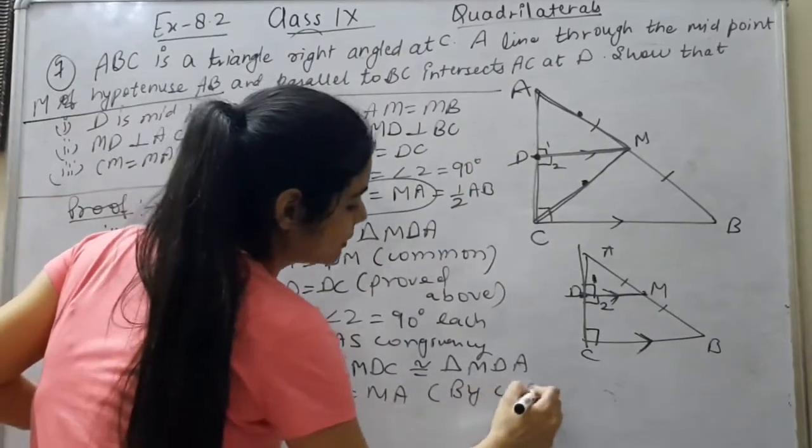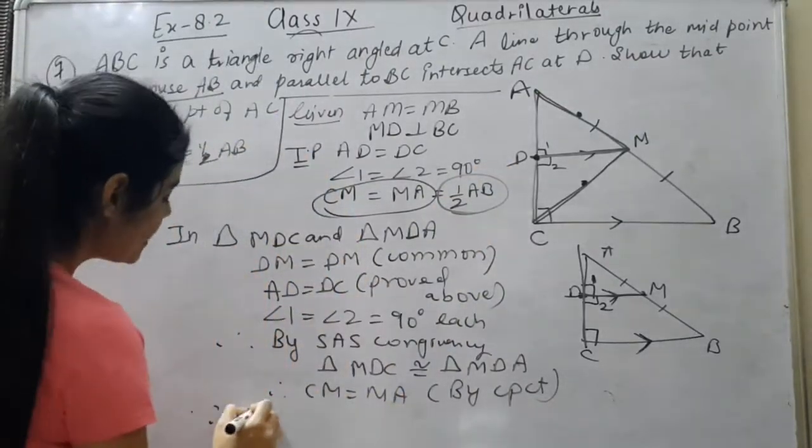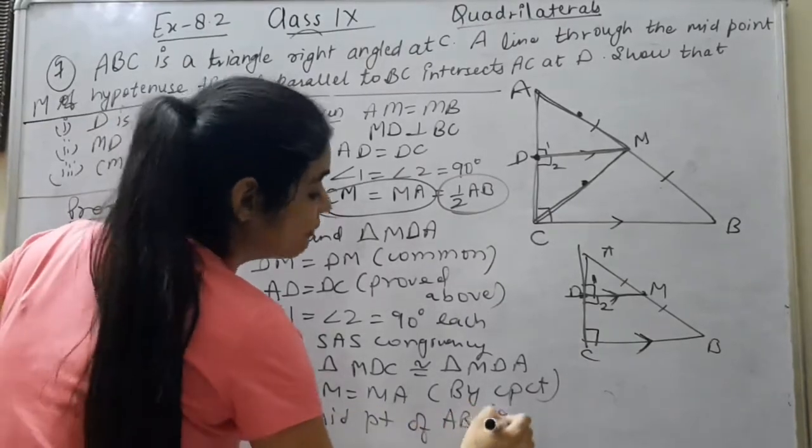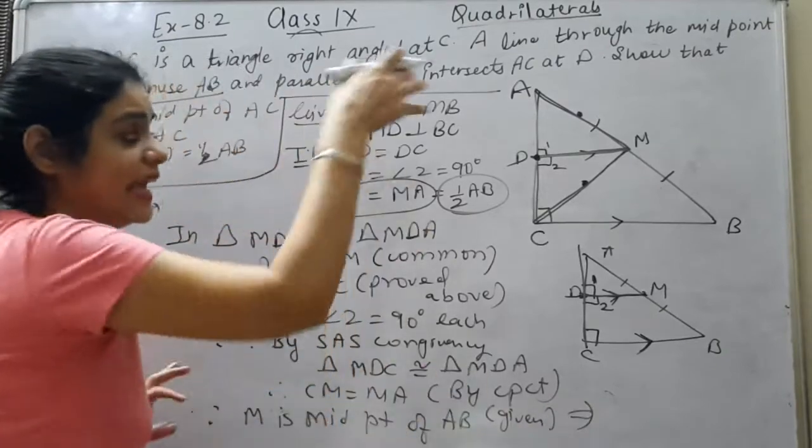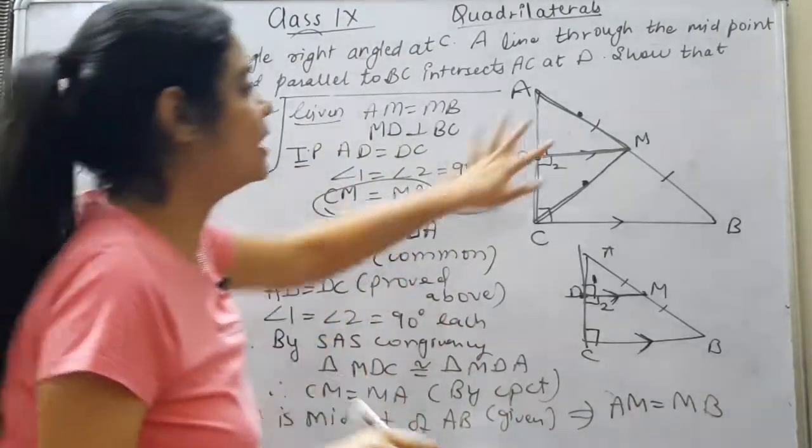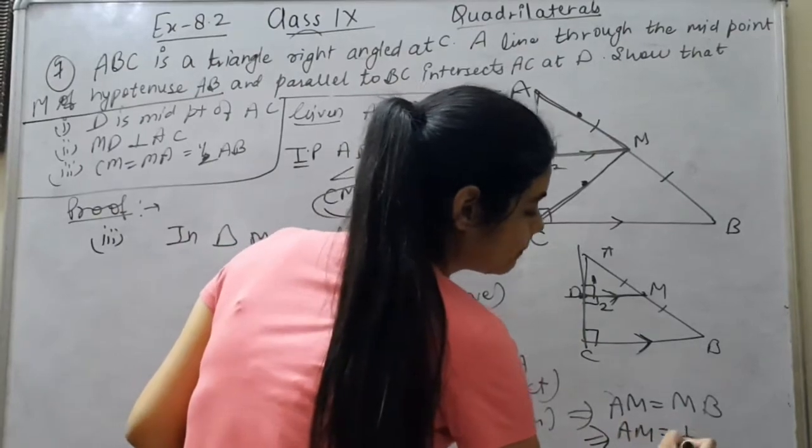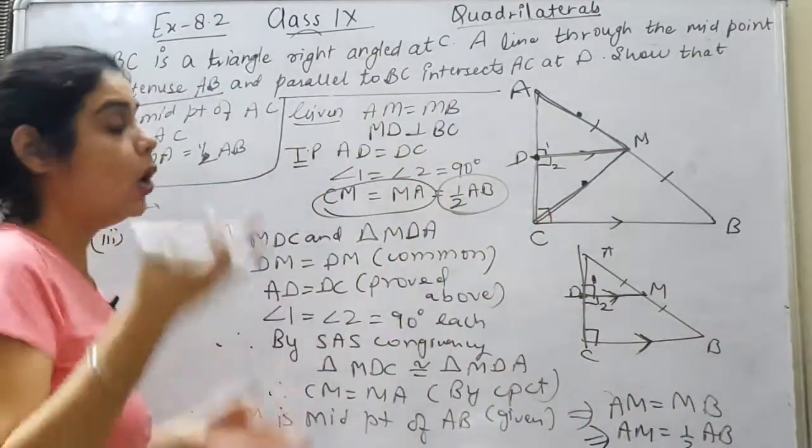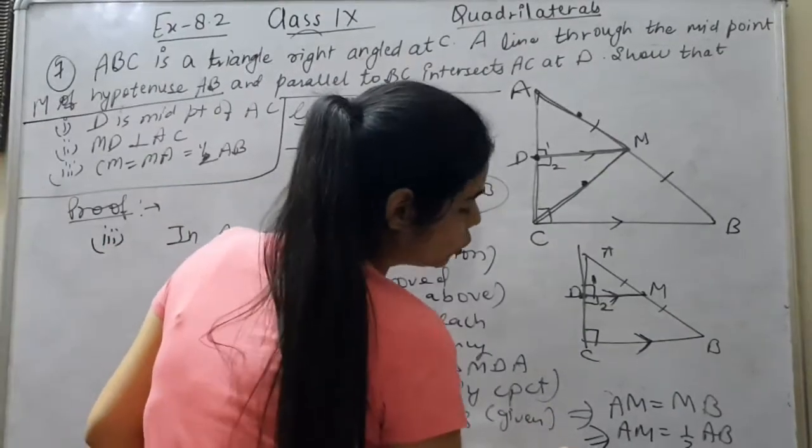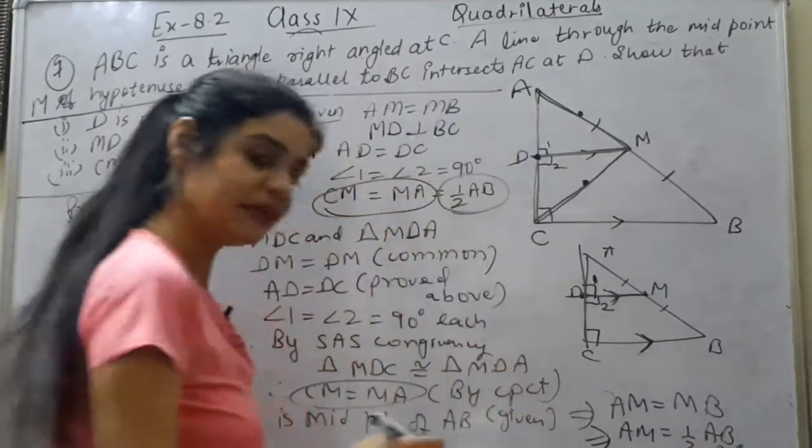Now what we are talking about this thing, we will write that because M is the midpoint of AB, which is given, then AM equals MB. And when AM equals half AB, and I have proved AM and CM equal, then CM equals half AB. So AM equals CM equals half of AB.